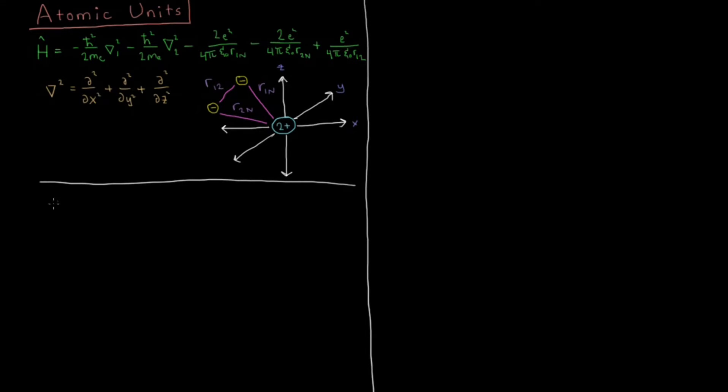First off we can look at for length, the natural unit of length for atomic length scales would be the Bohr radius which is 4 pi epsilon naught h bar squared over mass of the electron times the magnitude of the charge of the electron squared. And in atomic units we're just going to set this equal to 1. So this quantity is just going to be called 1 Bohr.